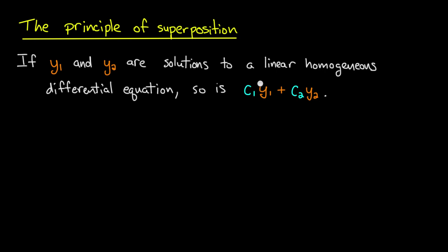So in this context we're dealing with linear homogeneous differential equations. And what the principle of superposition says is that if we have two solutions of a linear homogeneous differential equation, y1 and y2, then we can add those two solutions together and scale them by constants c1 and c2. In other words, take a linear combination of those two solutions and we get a new solution of the linear homogeneous differential equation.